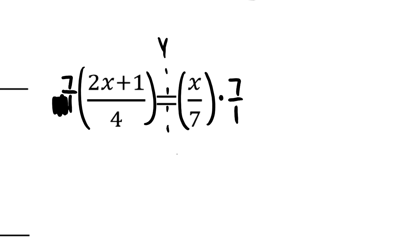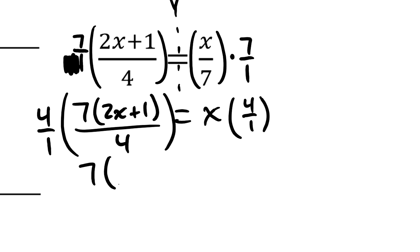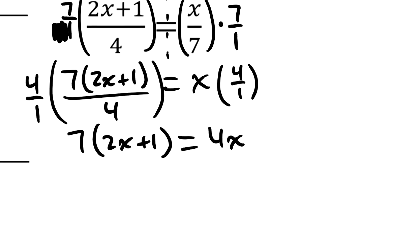Over on the right-hand side, you can see when I multiply x over 7 times 7, this becomes just simply x. And over on the left-hand side, I've now got a factor of 7 in my numerator. So I can write 7 times the quantity of 2x plus 1. And in my denominator, I have this factor of 4. What I'm going to do next is multiply both sides of this by 4 to destroy this denominator of 4 on the left-hand side. So times 4 over 1. On the left-hand side now, I'm left with 7 times the quantity of 2x plus 1. On the right-hand side, I have 4x. So those steps clear the fractions. I don't have any fractions that I need to be concerned with.